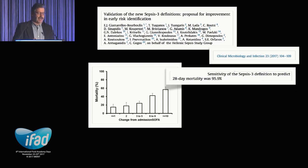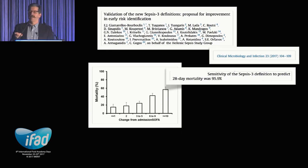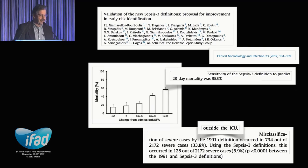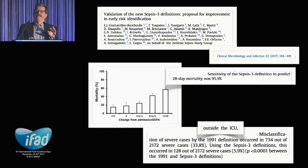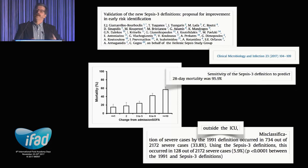Studies from Greece showed the sensitivity in predicting 28-day mortality was very good, and outside the ICU — looking at patients admitted to ICU — the misclassification was significantly lower with the new criteria.